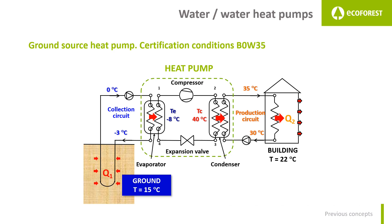Later, this high-temperature refrigerant flows through the condenser so it can transfer energy to the fluid in the production circuit, allowing us to obtain heating or domestic hot water. Regarding the certification conditions, the collection circuit — also called the primary circuit — is a closed loop filled with BRINE. In certification conditions, this BRINE enters the heat pump at 0 degrees, gives up its energy, and leaves the heat pump at minus 3 degrees. In the collection circuit, it then absorbs energy from the ground and increases its temperature again to 0 degrees.